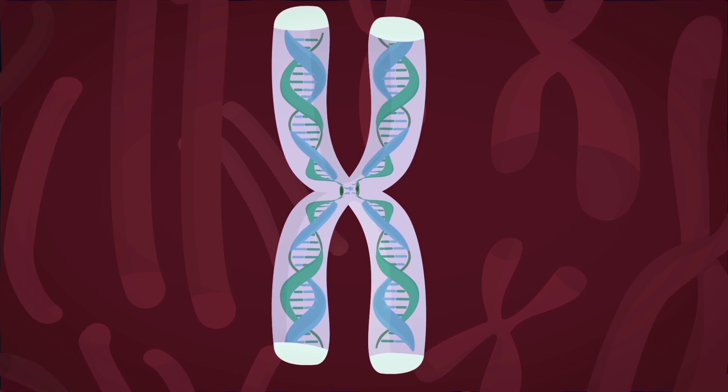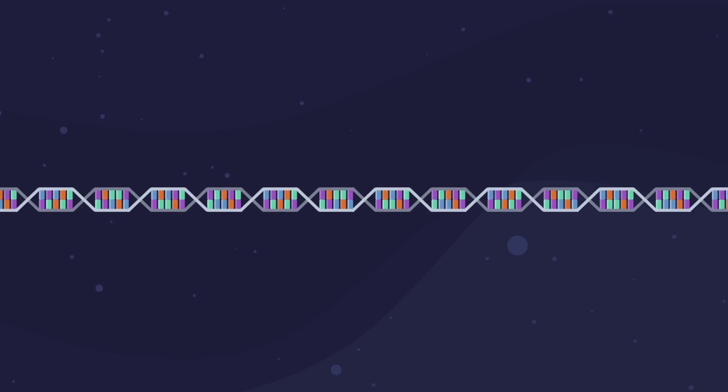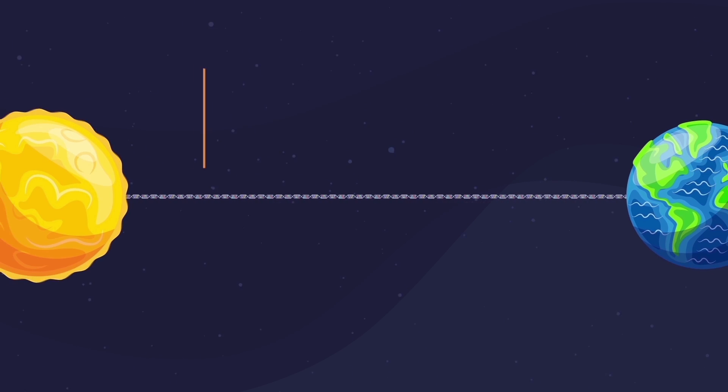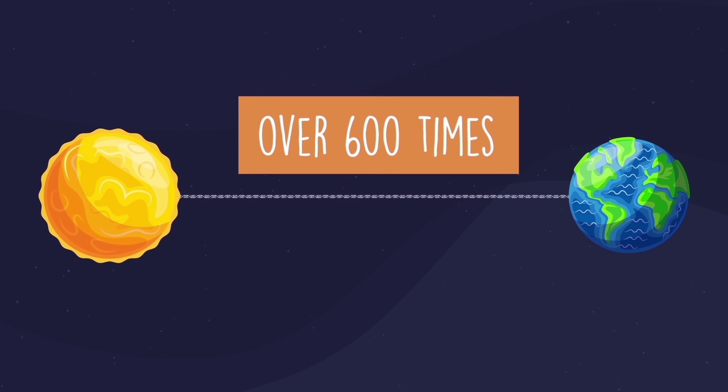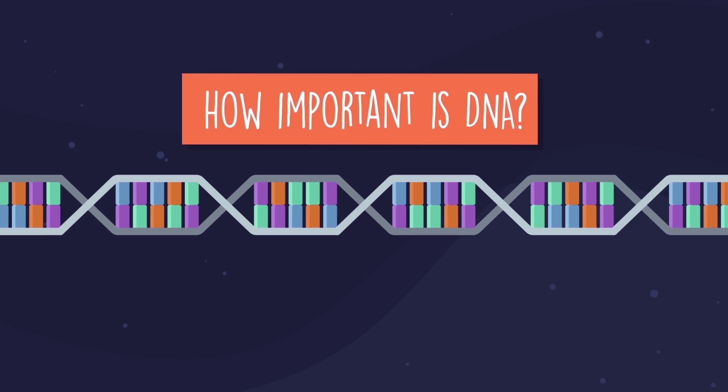Chromosomes contain the genetic code of your body. If you stretch all the DNA in your body end to end, it would reach to the sun and back over 600 times. Just how important is DNA?